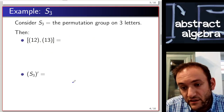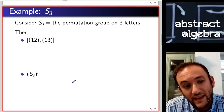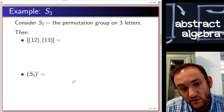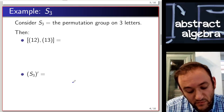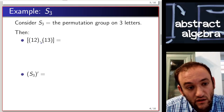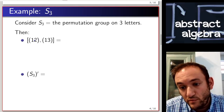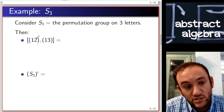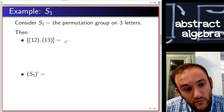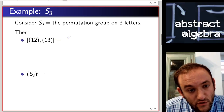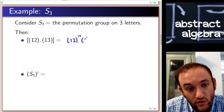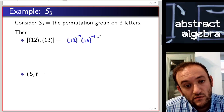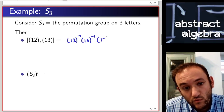Let's look at another group. Consider the group S3, the permutation group on three letters. Let's compute a commutator of the transpositions (1 2) and (1 3). So we have (1 2) inverse, (1 3) inverse, (1 2), (1 3).